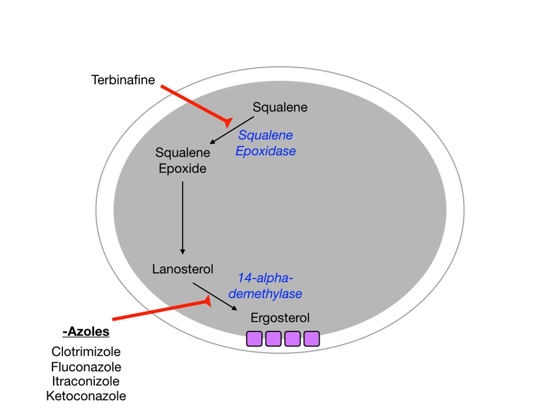By inhibiting squalene epoxidase, you never end up forming ergosterol because you can never form the squalene epoxide. So terbinafine does pretty much the same thing as the azoles — it just does it at a different location. Both terbinafine and the azoles prevent the formation of ergosterol through different mechanisms, and both disrupt the integrity of the fungal cell plasma membrane.